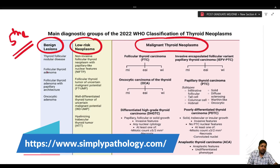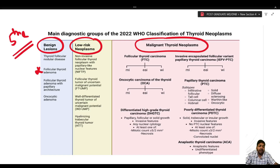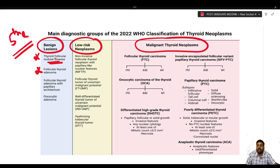Previously, benign lesions only included thyroid adenoma, but now we cannot definitively say whether a colloid goiter, multinodular goiter, or multinodular hyperplasia is entirely non-neoplastic, because some of these entities like colloid goiter were seen molecularly to have neoplastic or monoclonal lesions.